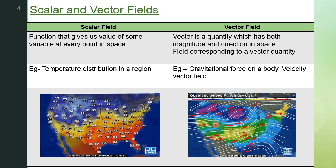If you define a vector quantity over a certain region of space, we get what is called a vector field. This figure shows meteorological observations of wind direction in different parts of the world. Since the velocity of wind is a vector quantity, it will have direction as well. So this figure is showing a vector field. That is the difference between a scalar field and a vector field.